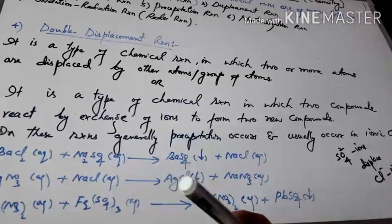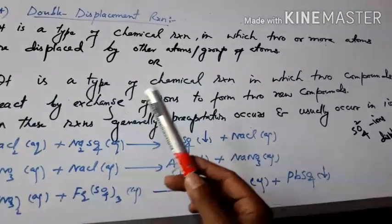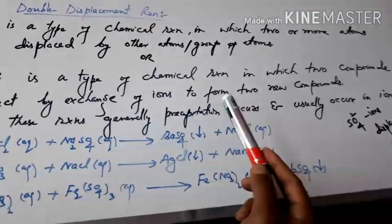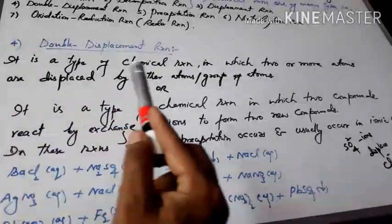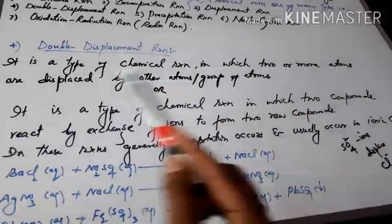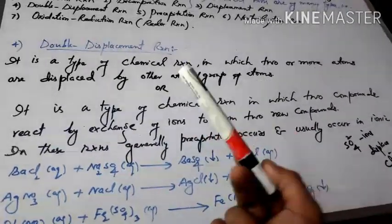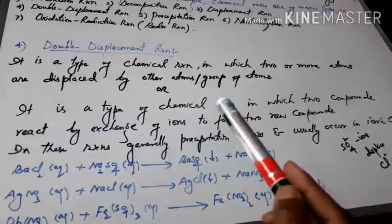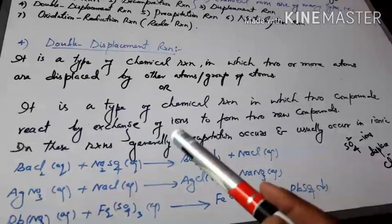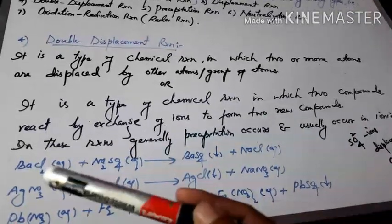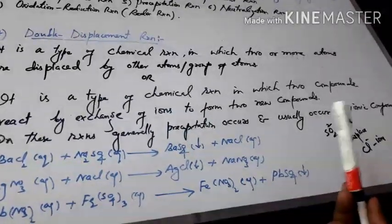In some cases, on the product side, there is an insoluble substance produced, which we call a precipitate. So in double displacement reaction, a precipitate is produced. The definition: it is a type of chemical reaction in which two or more atoms are displaced by another atom or group of atoms. Or, it is a type of chemical reaction in which two compounds react by exchange of ions to form two new compounds. In these reactions, generally precipitation occurs and they usually occur in ionic compounds.